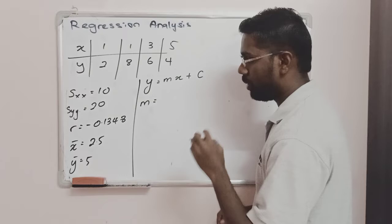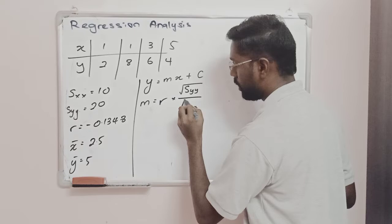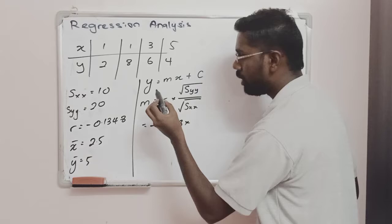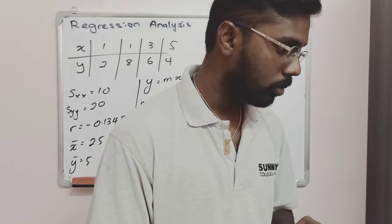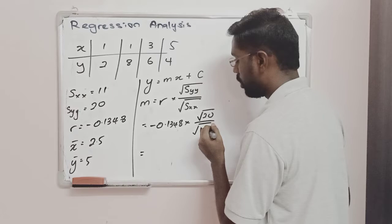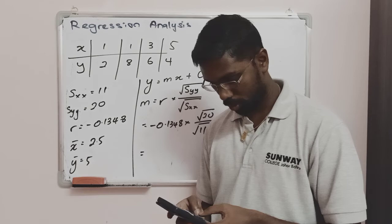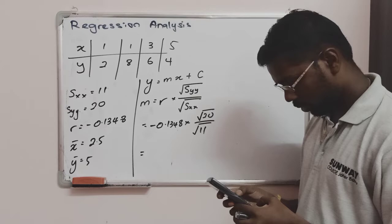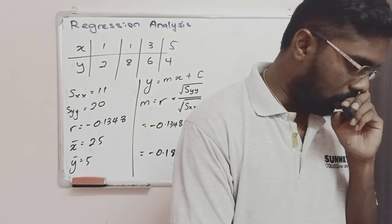For M, it is going to be R multiplied by the square root of SYY divided by the square root of SXX, which gives negative 0.1348 multiplied by the square root of 20 divided by the square root of 11. My R value is negative, and my M value comes out to negative 0.1818.